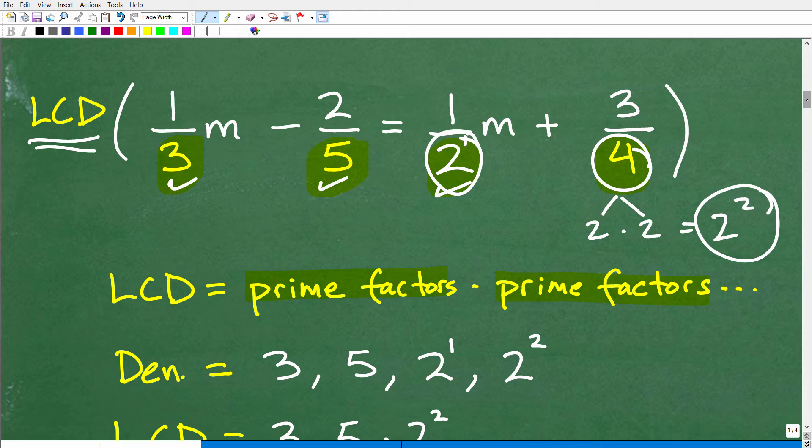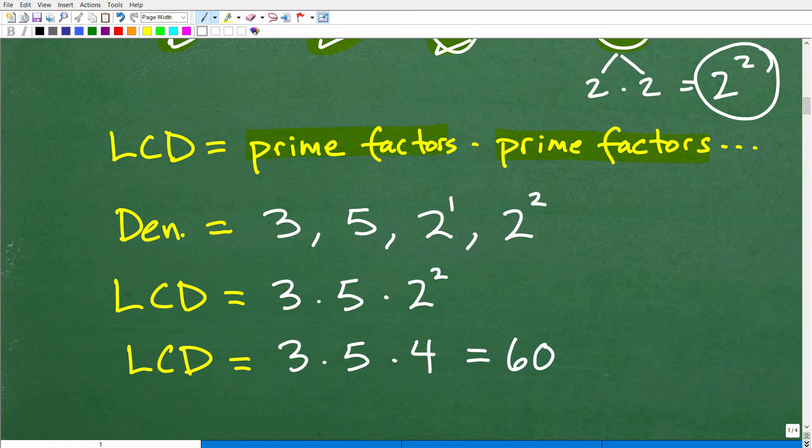So, this is 2 to the second power. And then here, notice we have a 2, but this is 2 to the first. So, let's list all of our prime factors in the denominator. So, that's 3, 5, 2 to the first, and 2 squared. Okay, so when you are calculating the LCD or finding the LCD, what we need to do is have each one of those prime factors represented as part of this multiple, this product. So, we need a 3. We need a 5.